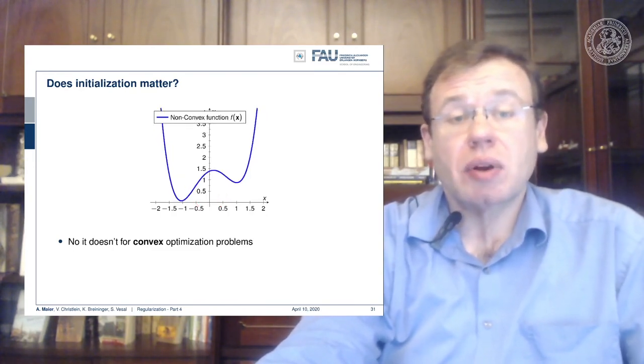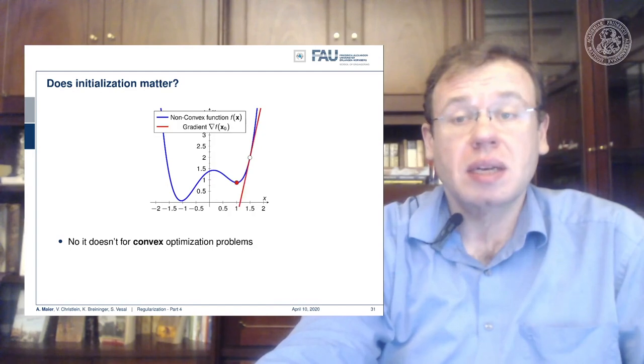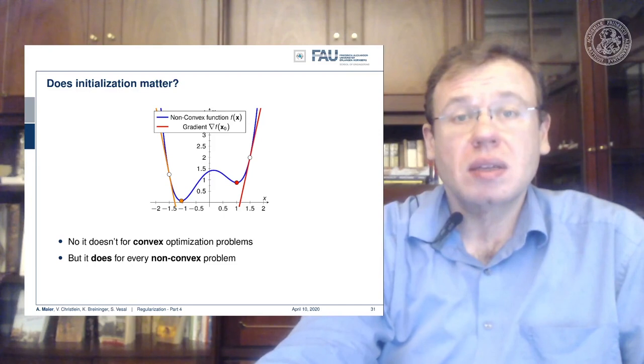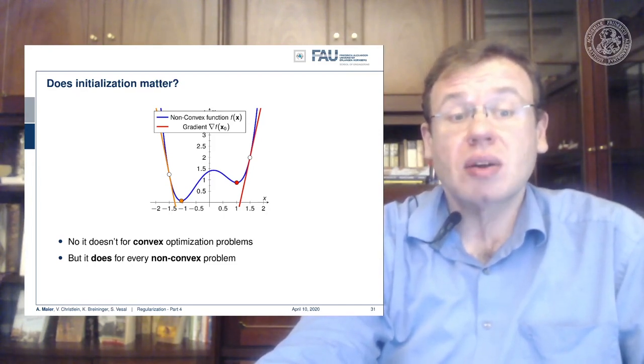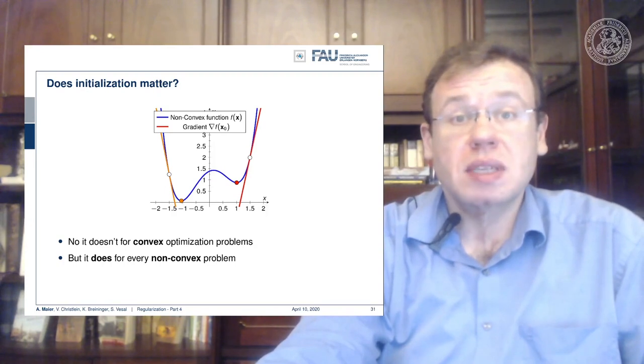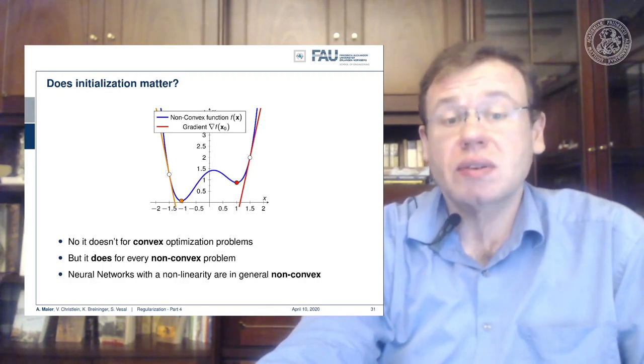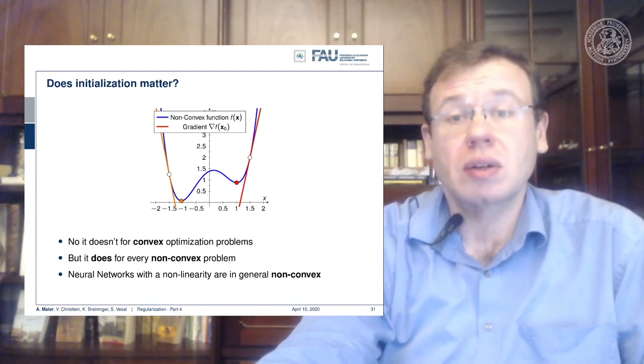However, many of the problems that we are dealing with are non-convex, and a non-convex function may have different local minima. If I start at this point, you can see that I achieve one local minimum by the optimization. But if I were to start at this point, you can see that I would end up with a very different local minimum. For non-convex problems, initialization is actually a big deal, and neural networks with non-linearity are generally non-convex.